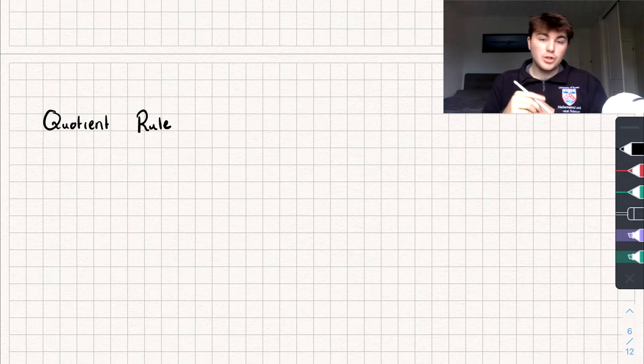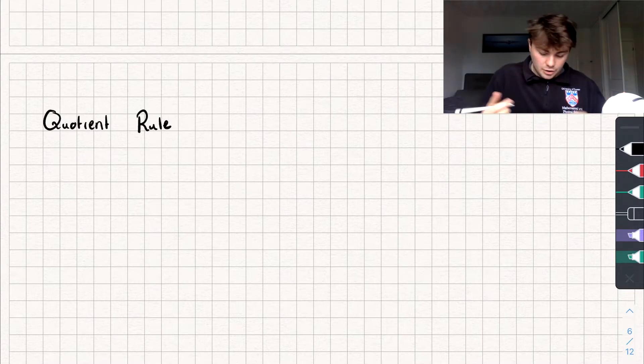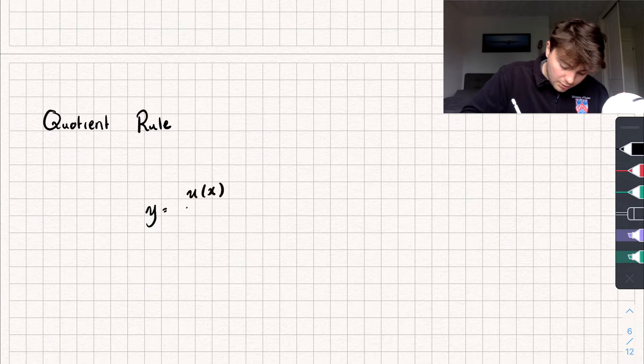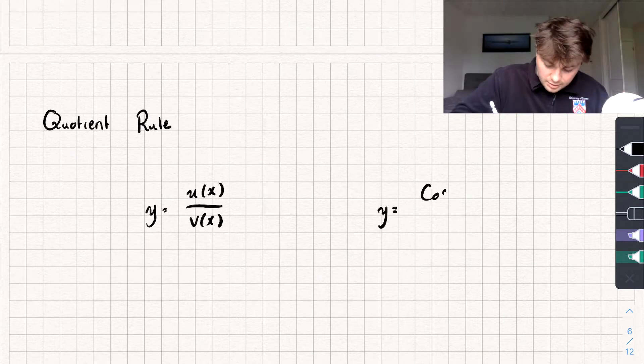Hello, in this video I'm going to teach you how to use the quotient rule to calculate a derivative. We're going to be using the quotient rule if we've got one function divided by another function. So it might look like this: y equals u(x) divided by v(x). And if you want to see a function that looks like that, it might be cos x divided by x squared plus 5.